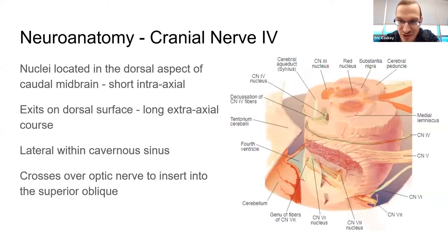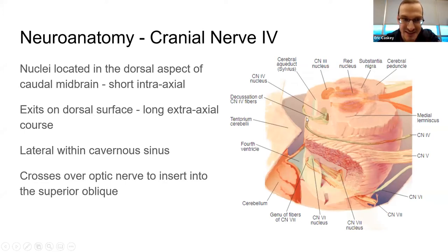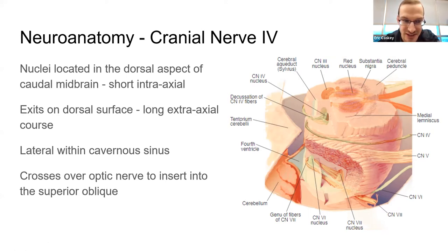Cranial nerve 4 — the one we all know and love — does decussate approximately and exits along the dorsal surface. We'll get more into cranial nerve 4 a little later.